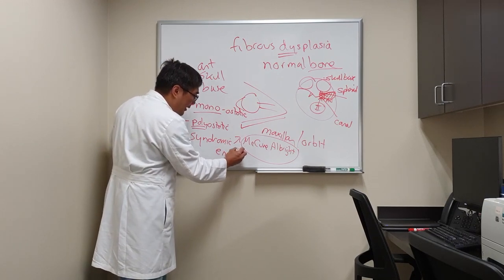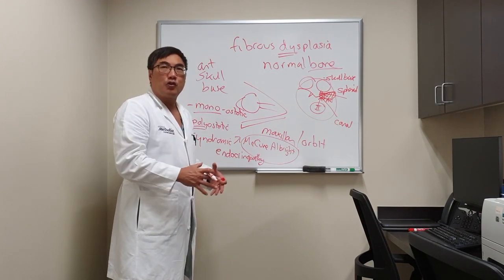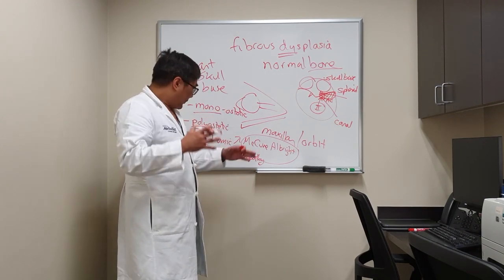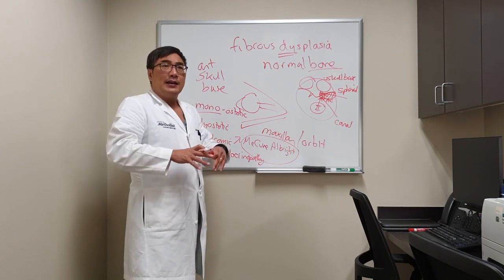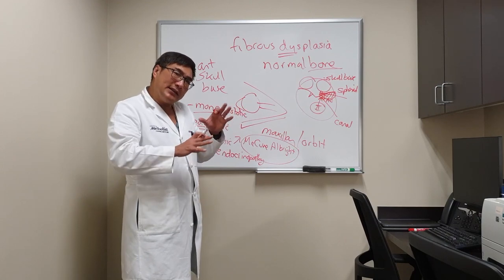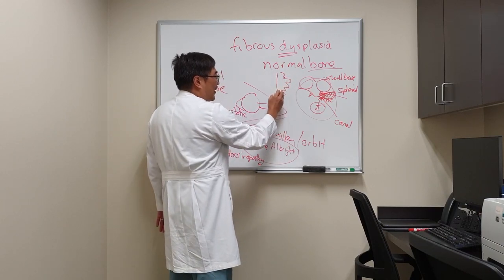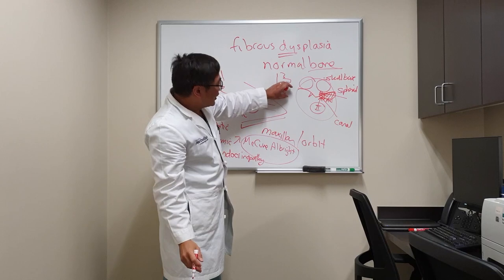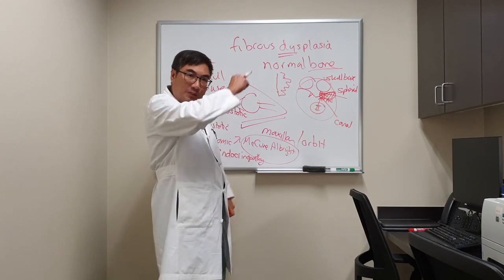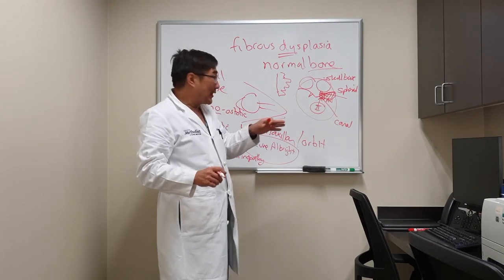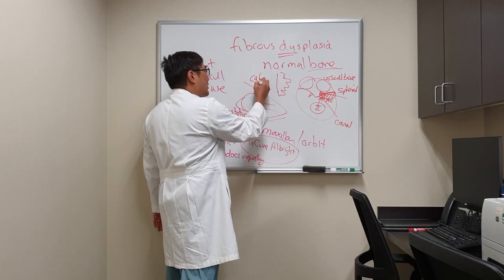The endocrinopathy in McCune-Albright involves excess hormones — it could be hyperthyroidism, Cushing's, or excess growth hormone. It's basically a hormone excess state. In addition, patients can have café au lait spots, similar to neurofibromatosis type 1, but in McCune-Albright the café au lait spots are often described as 'coast of Maine' because they have a very strange, squiggly border — like the coastline of the state of Maine.